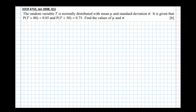The first thing we're going to do is look at these probabilities. Drawing a normal distribution — very rough — it says the probability that t is greater than a value is 0.05. Marking this as 0.05, that's the shaded area. The key here is to find the z value in two different ways.